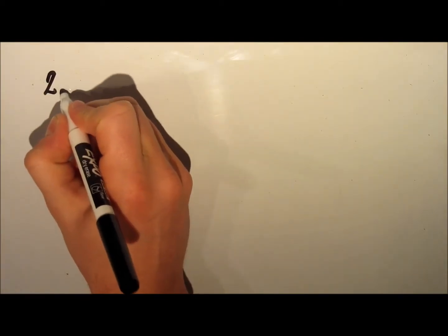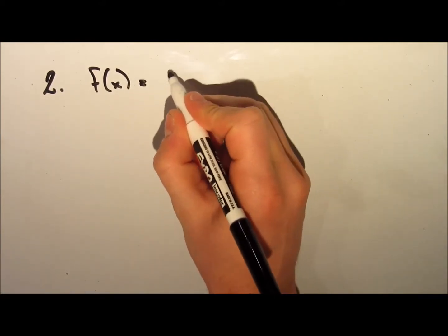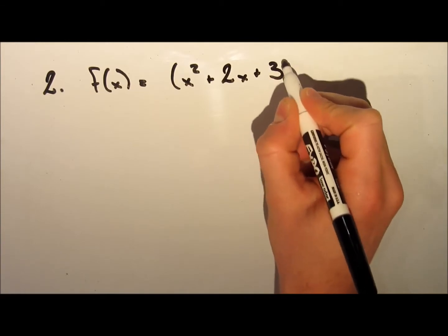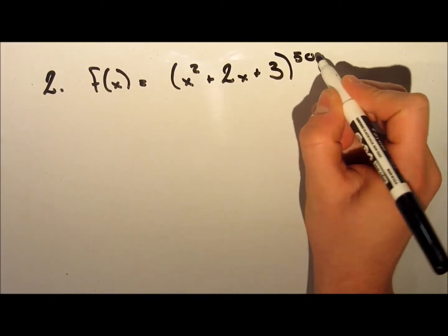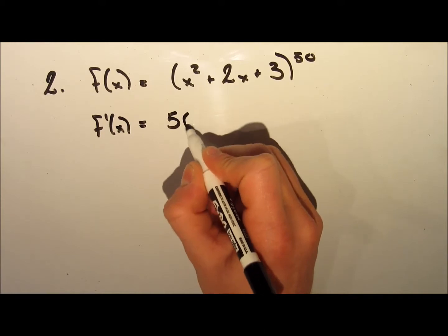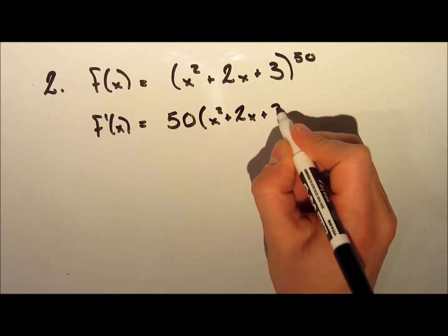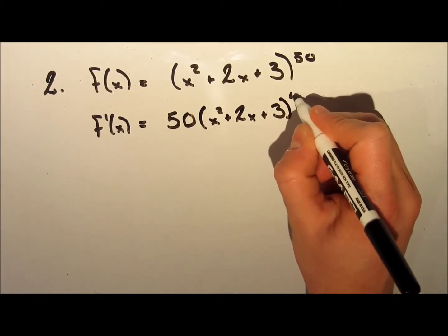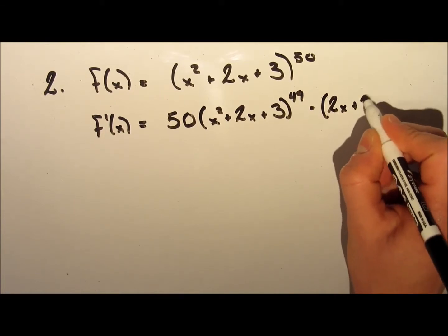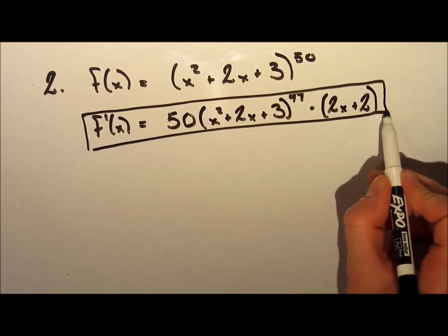In my second example we're going to take the derivative of the function f of x equal to x squared plus 2x plus 3 to the exponent 50. The inside of this function is the same as the previous one, but with exponent 50, so it would take a very long time to expand all those terms. But using the chain rule we can do this very quickly. We take down the exponent 50, leave the inside the same, and subtract one from the exponent to give us 49. Then we just take the derivative of the inside which is 2x plus 2, and we're done.